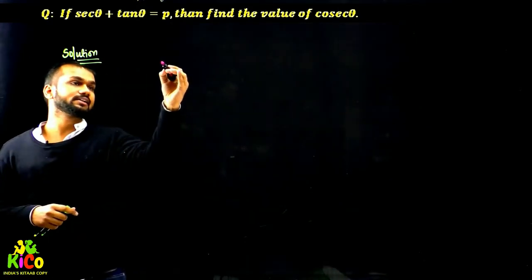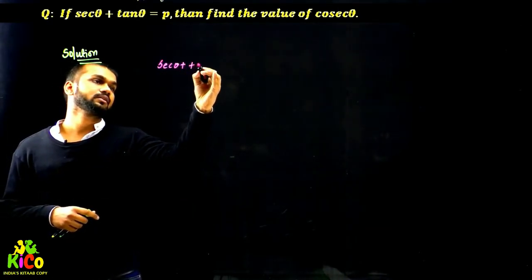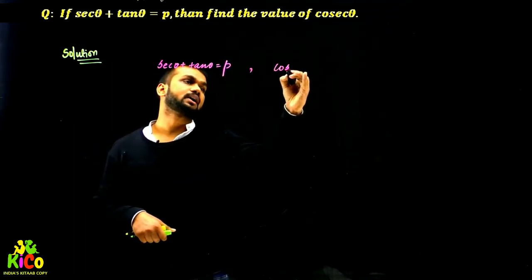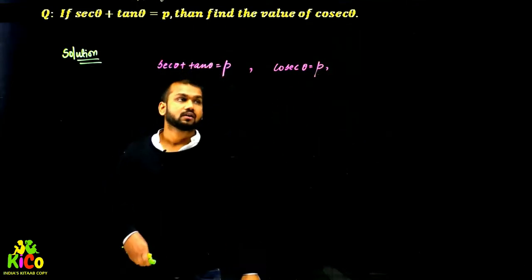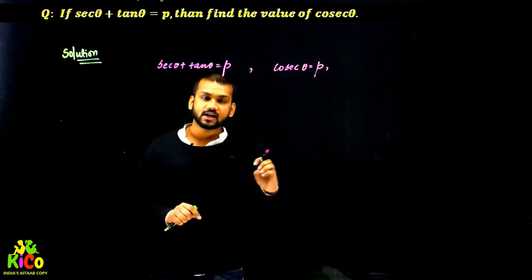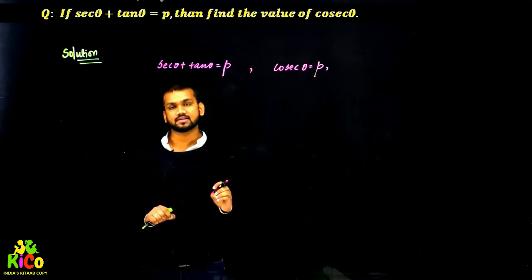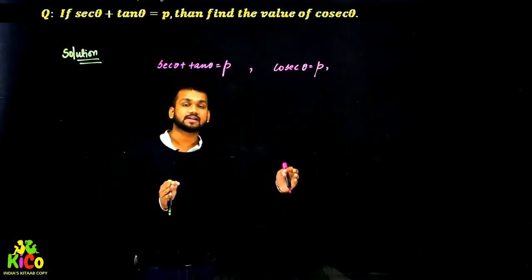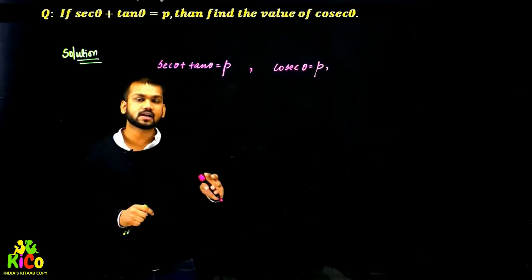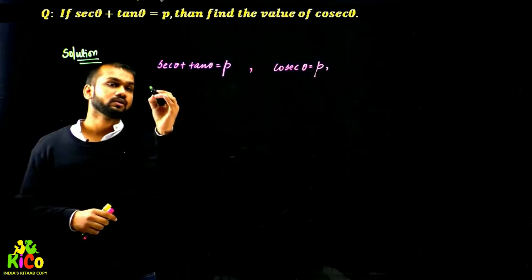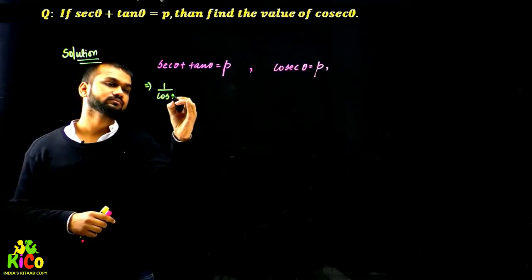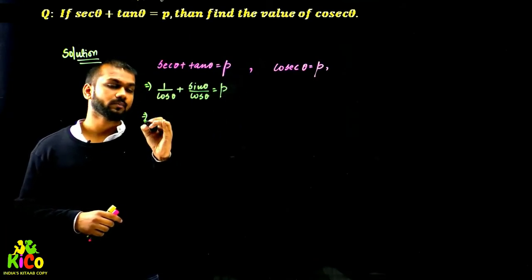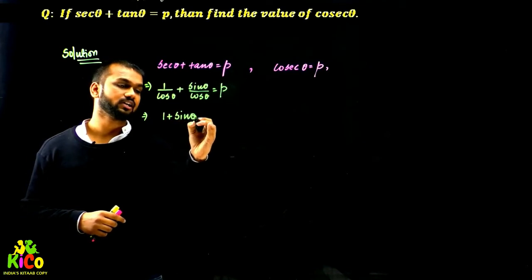This is given to me: sec θ plus tan θ equals P. When dealing with a trigonometric identity problem, if I don't understand what I need to do next, my approach is to convert trigonometric functions into sin and cos. So: sec θ is 1 upon cos θ, and tan θ is sin θ upon cos θ. That gives us (1 plus sin θ) upon cos θ equals P. This is our first equation.